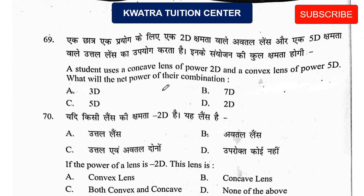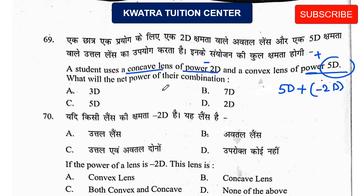Next: A student uses a concave lens of power 2D and a convex lens of power 5D. The concave lens gives −2D (negative) and the convex lens gives +5D (positive). Adding them: −2 + 5 = 3 diopter. Three diopter is the answer — that is option A.